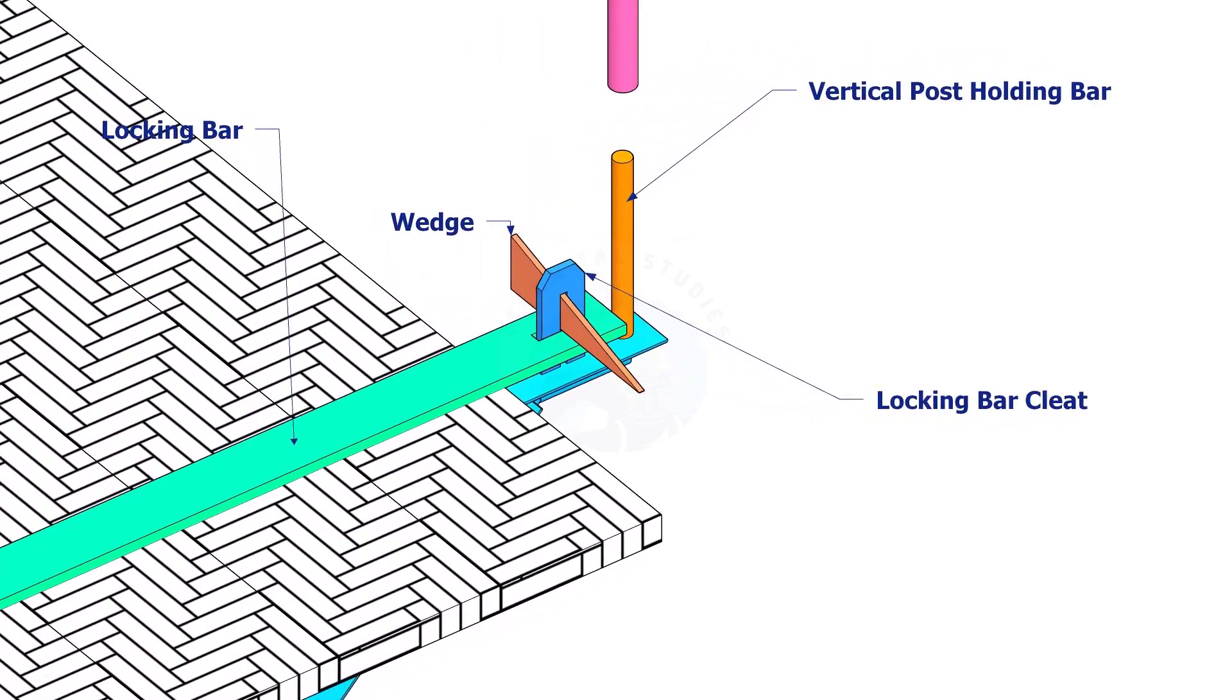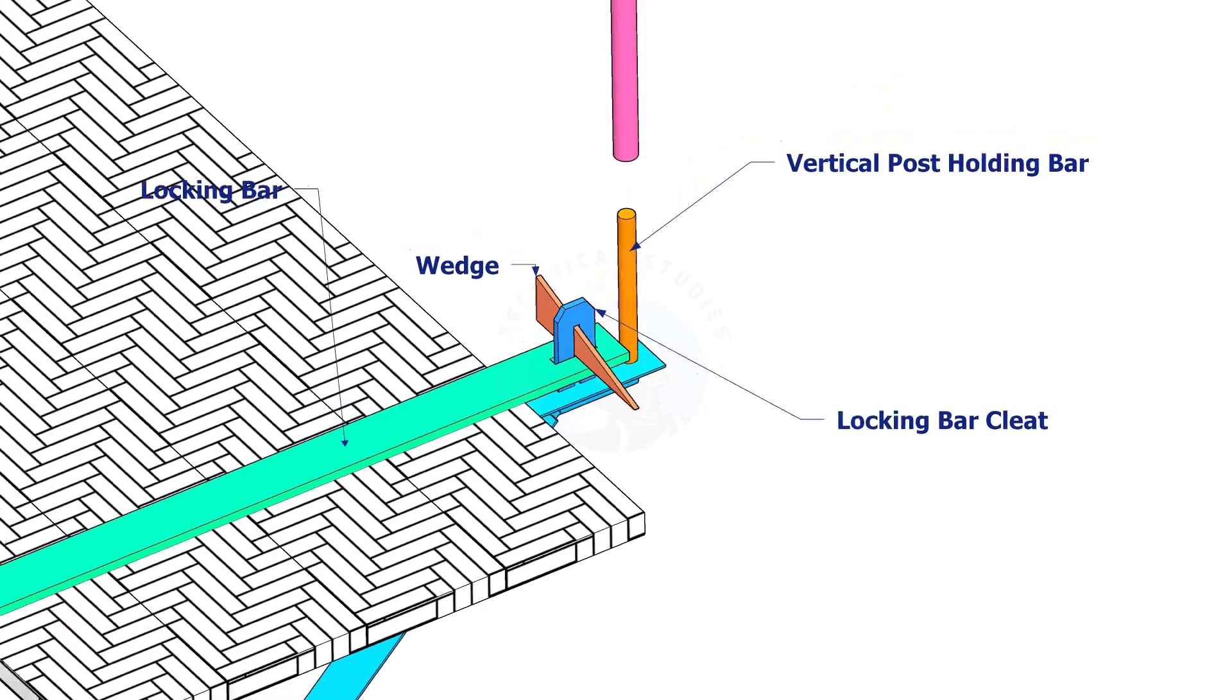Locking bar, locking bar cleat, and the wedge are used to arrest the planks on the bracket.